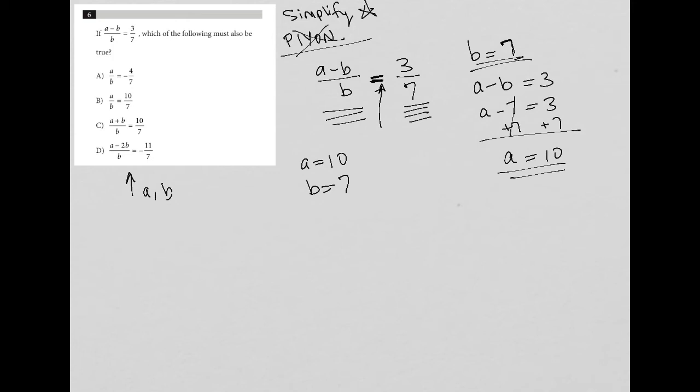So now, when I go to the answer choices, it says which of the following must also be true. Well, choice A says that A over B is equal to negative 4 over 7. Well, that's not true. Because for us, A over B would be 10 over 7. So 10 over 7 does not equal negative 4 over 7.